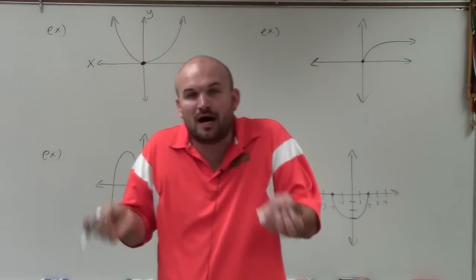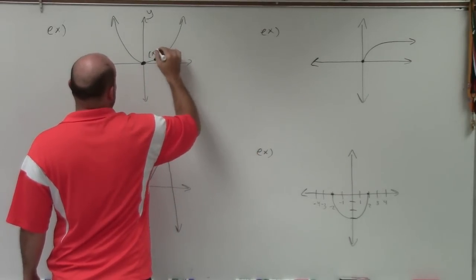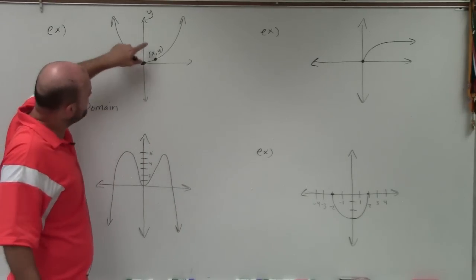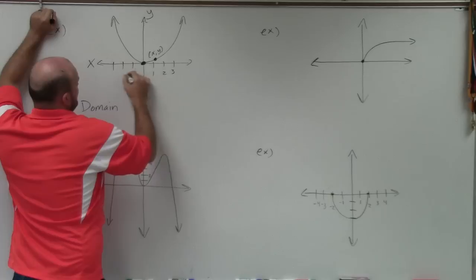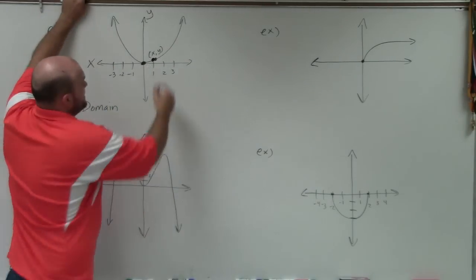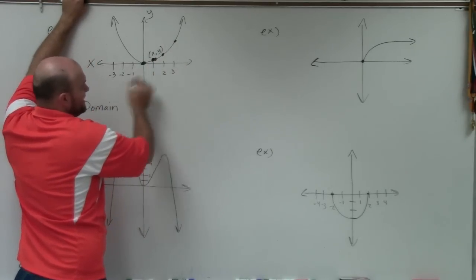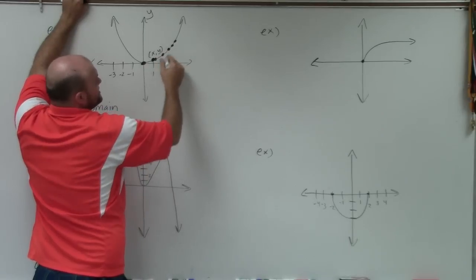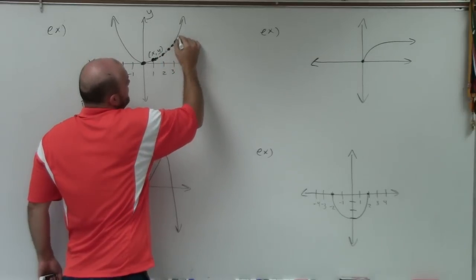A graph is made up of an infinite amount of points. This point is x comma y. When I'm looking at the domain, I'm asking what are all the values for x? Between my integers — 1, 2, 3, negative 1, negative 2, negative 3 — I also have points. What about 2.5? What about 2 and 2 thirds? There are infinite many points between the integers that make up this graph.